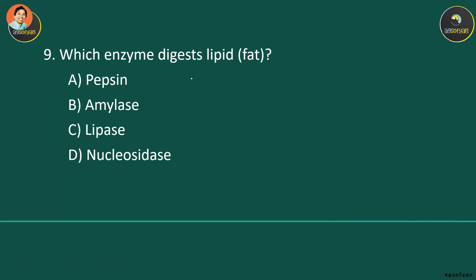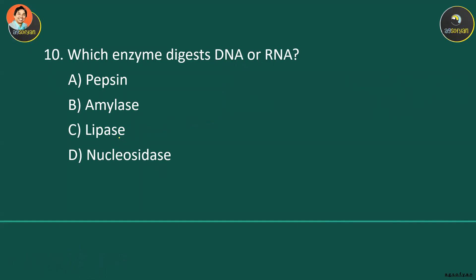Which enzyme digests lipids or fat — A, B, C, or D? The enzyme that digests lipids is called lipase — the name tells you it digests lipids. We also know pepsin digests protein and amylase digests carbohydrates. There are also enzymes called DNase and RNase that digest DNA and RNA respectively.